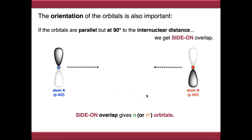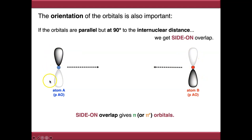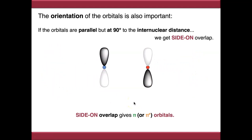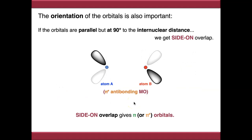If we take our p orbitals and flip the phase of one of them so the overlap is now destructive - one lobe shaded, one unshaded, the other lobe shaded and unshaded - this is destructive overlap. When these come together, the orbitals don't want to get near each other. This gives us a pi star anti-bonding molecular orbital, again with the star designation.